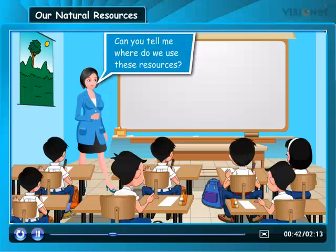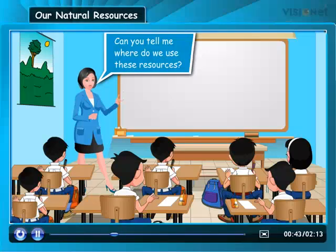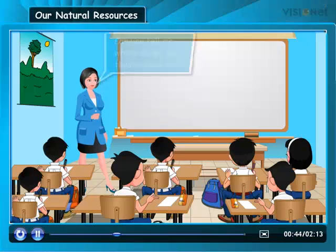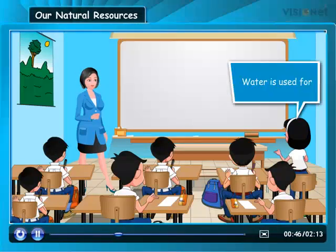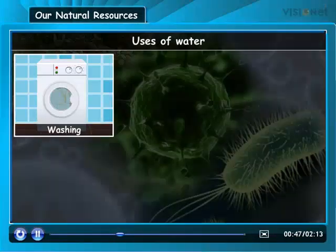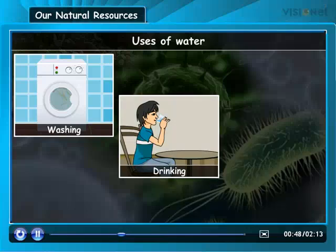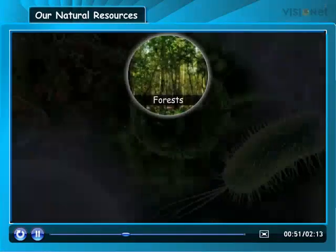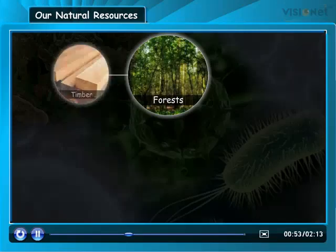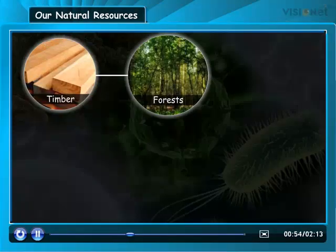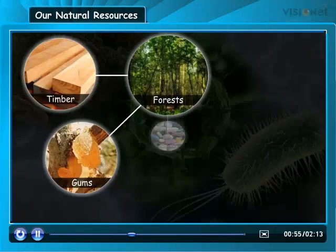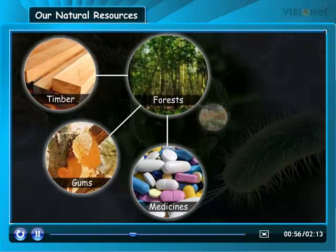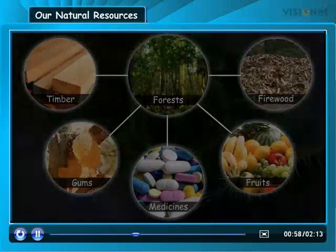The teacher asks: Can you tell me where do we use these resources? Water is used for washing, drinking and even generating electricity. The forests provide us with timber, gums, medicines, fruits and firewood.